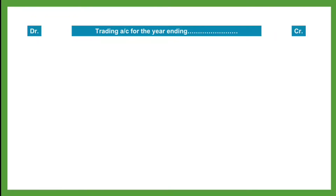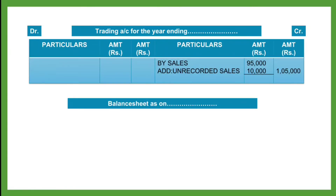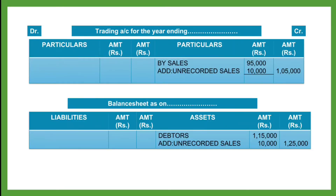Let us see how it can be solved in the final account. In the trading account, on the credit side, the trial balance item is recorded as sales. Another trial balance item, debtors, is recorded on the asset side of the balance sheet. Now the amount of Unrecorded Sales needs to be added into sales, as it was previously unrecorded. So we have added 10,000 as Unrecorded Sales.